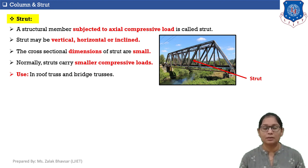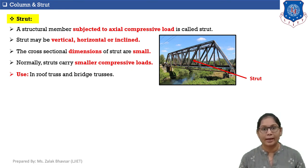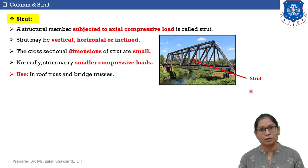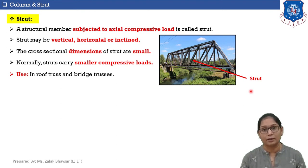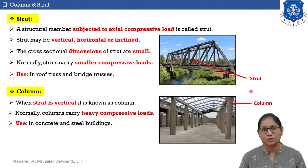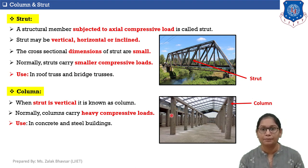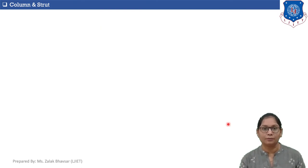A strut is a structural member subjected to axial compressive load. Struts are generally used in roof trusses and bridge trusses — the inclined member of a bridge truss is called a strut. Struts may be vertical, horizontal, or inclined, and their cross-section dimensions are comparatively small. When a strut is vertical, it is called a column. Columns are designed to carry heavy compressive loads and are used in concrete and steel buildings.